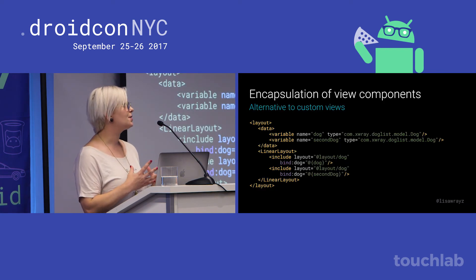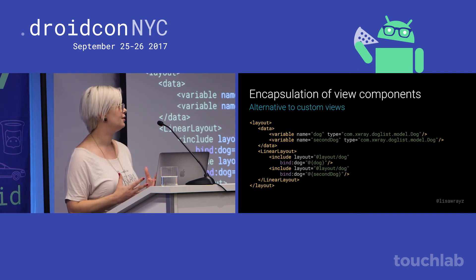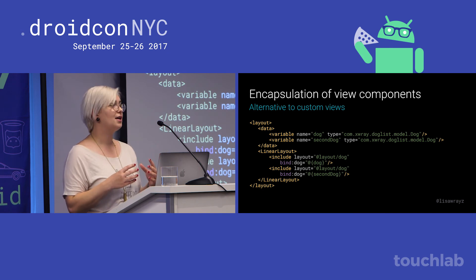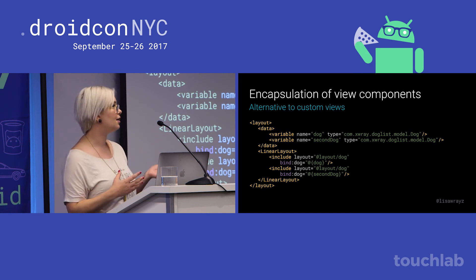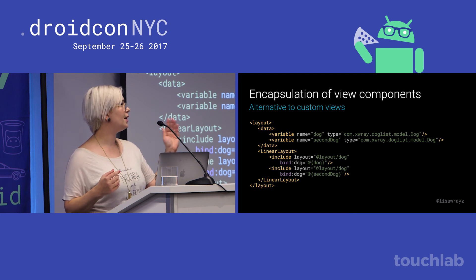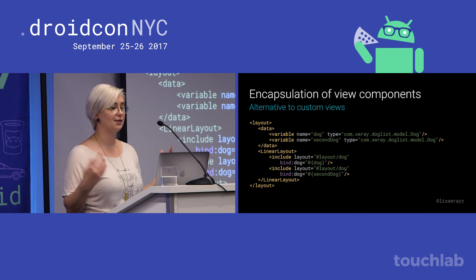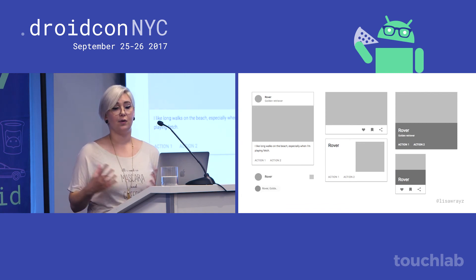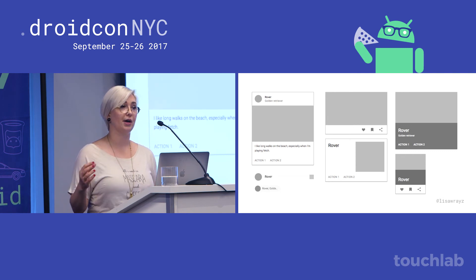Another fun use is encapsulation of view components — it's a great alternative to custom views which do not require custom drawing. For example, in this layout I would like to put two dogs at the same time. Instead of making a custom dog view and putting two of them in my layout, I've simply included the dog layout twice and I'm able to bind two different dogs, one to each layout, treating them as custom views. Along those lines, you could have many different layouts each still associated with a dog object, and it's just as easy to bind any of them to your dog model object.